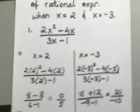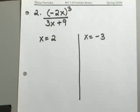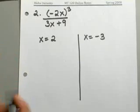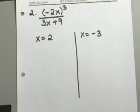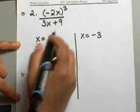With the same values, let's go ahead and look at another example here. Let's say you have negative 2X quantity to the third power over 3X plus 9, and we're evaluating it at the same values of X, 2 and negative 3. So again, we'll go ahead and get started with X equals 2.